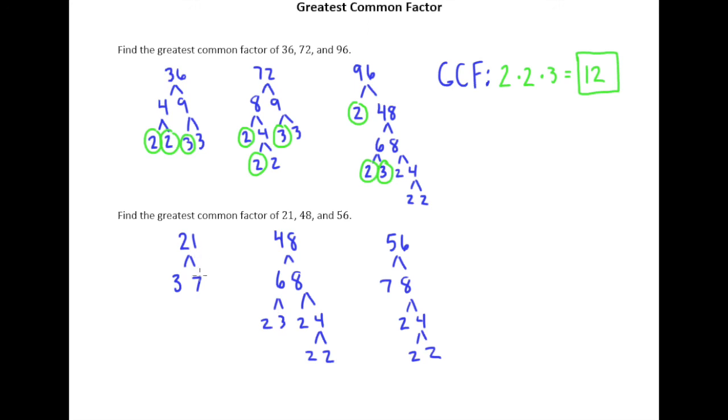Or 7's, 21's got a 7, 56 has a 7, 48 does not. So there is nothing that I can circle in all three numbers.